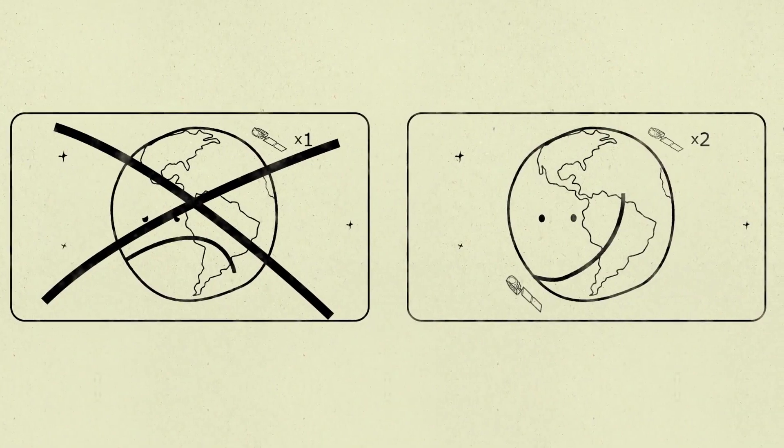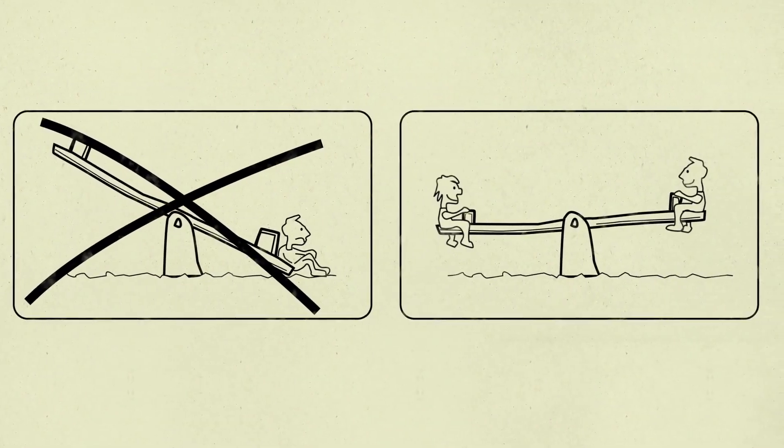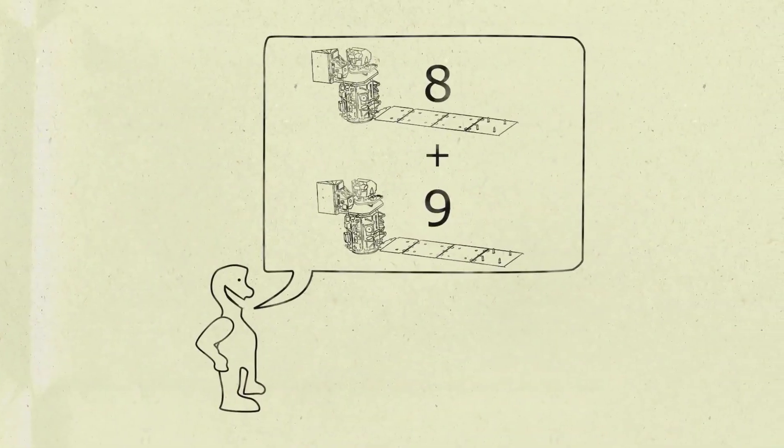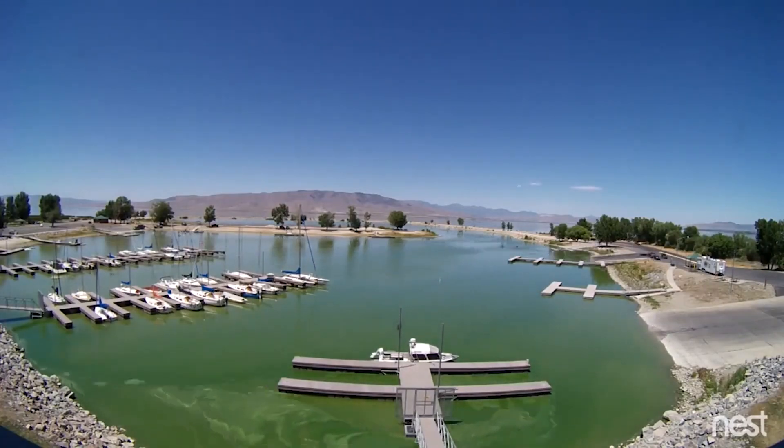In this case, two satellites are better than one. Landsats 8 and 9 can work together to provide near real-time data about what's happening on the surface of our planet.